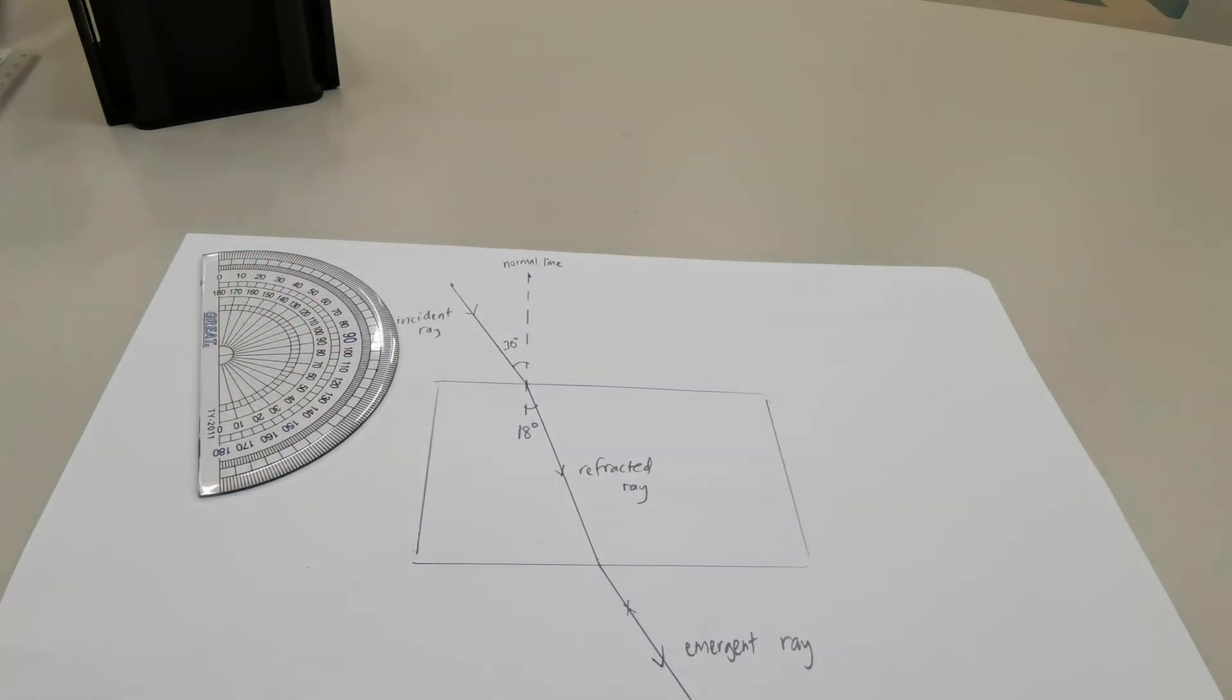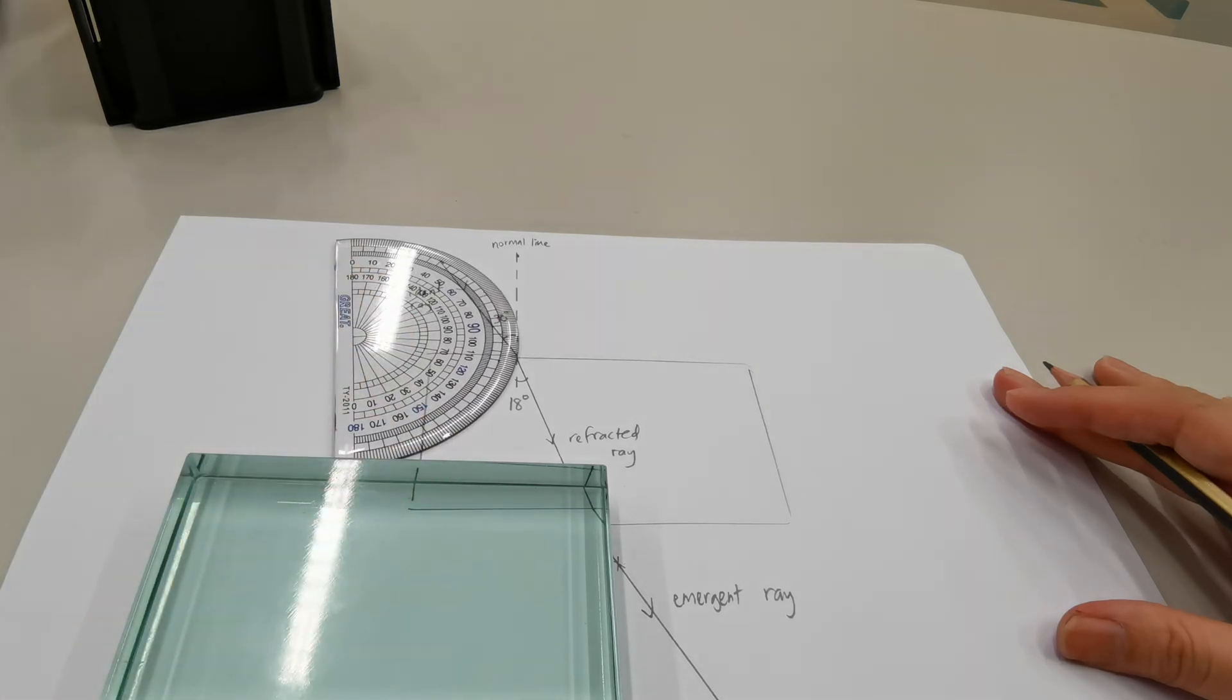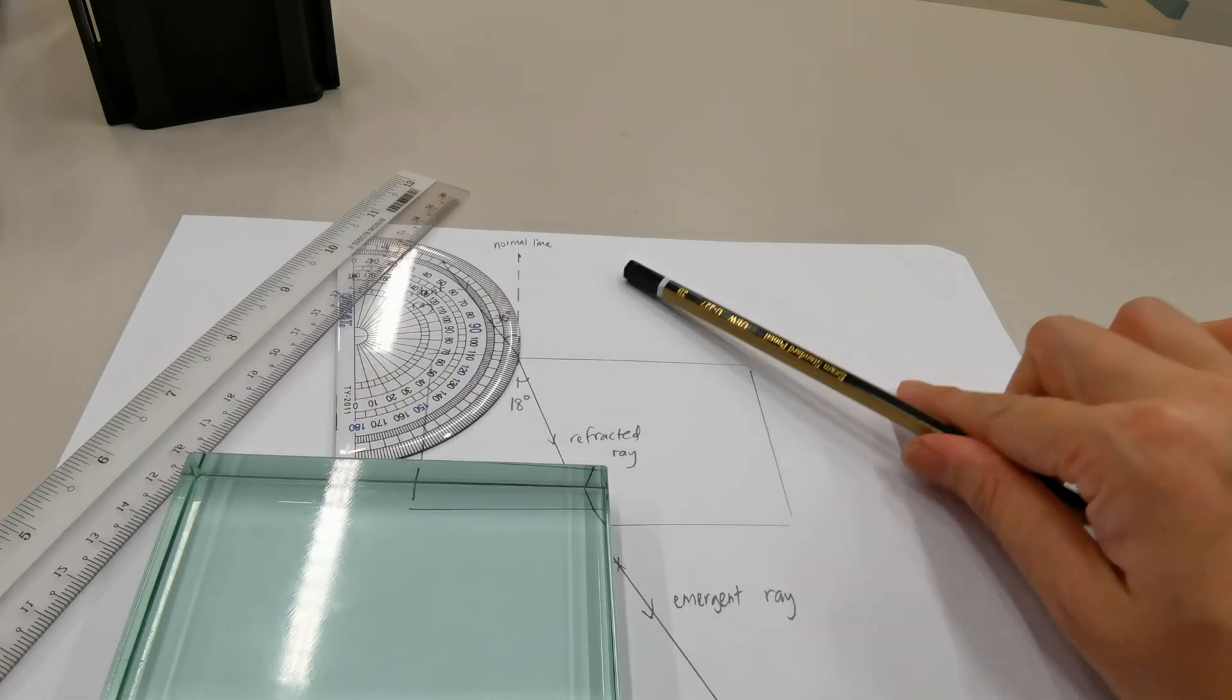And that's how you conduct an experiment for light using a ray box with a glass block, protractor, a ruler, and a pencil.